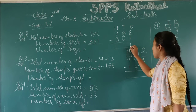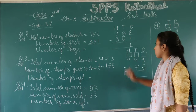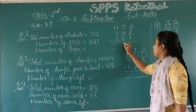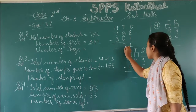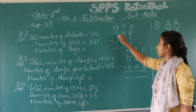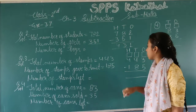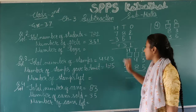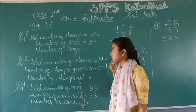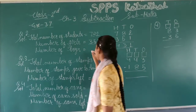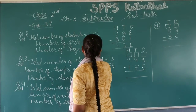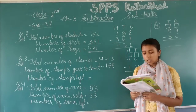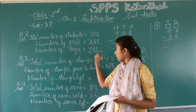So we subtract the number of girls from the total: 2 minus 1 is 1, then 8 minus 5 is 3, and 7 minus 3 is 4. The answer we get is 431. So the number of boys in that school is 431. Boys calculation is complete.